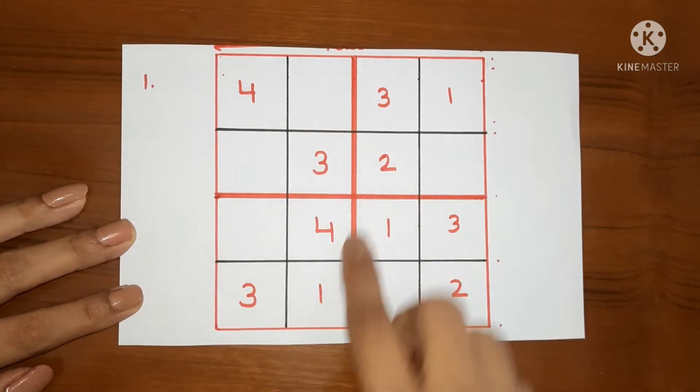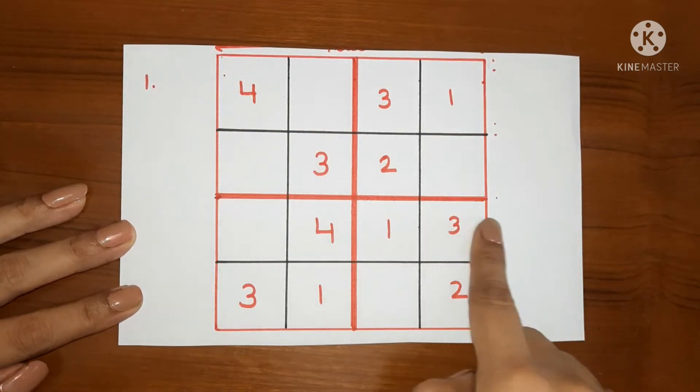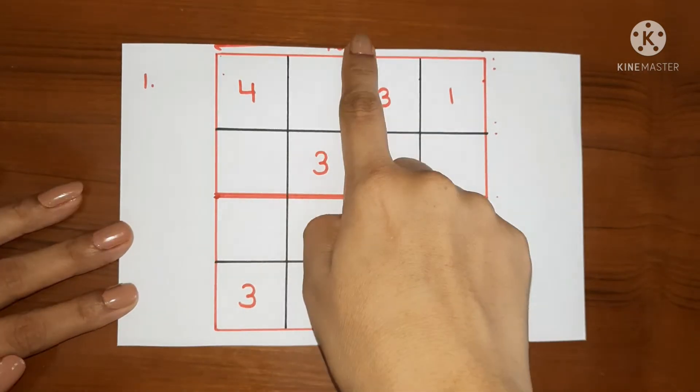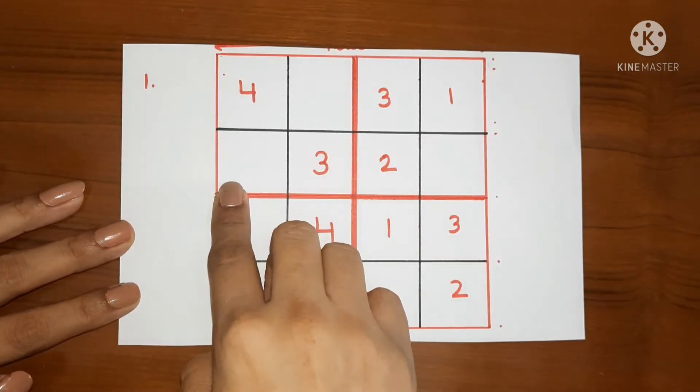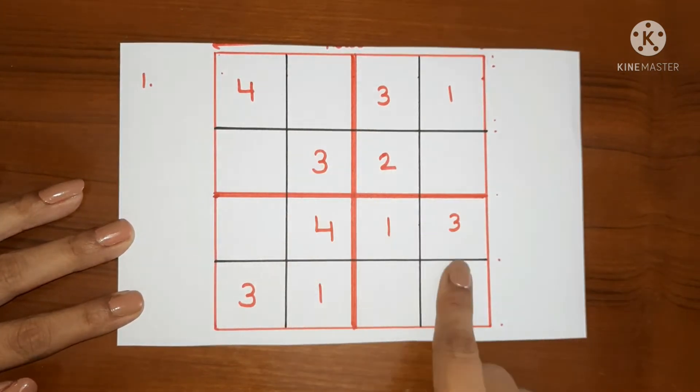Let's learn the rules first. These are columns. It has 4 columns and 4 rows and 4 boxes. I have highlighted the box so that the child understands these are 4 different boxes.